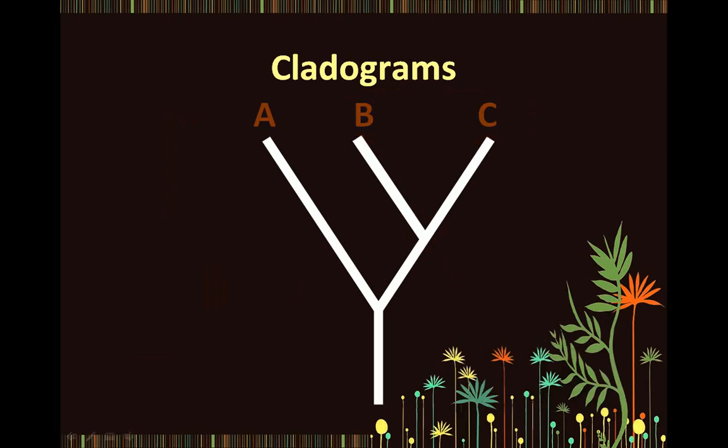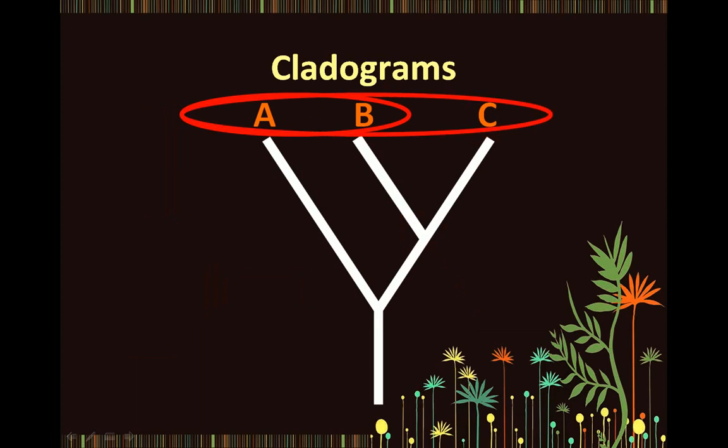So again, when we are considering species A, B, and C, remember that A and B, and A and C, are equally closely related. So A and B and A and C are equally closely related.